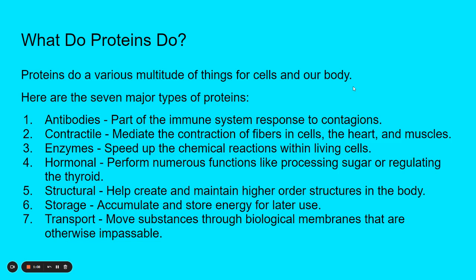What do proteins do specifically? They do a multitude of things for cells in our body, but there are major types of proteins that do certain tasks. There are many different ones in these different groups, but it's nice to have a general overarching archetype. So the first thing being antibodies, which are part of the immune system response to contagions. There are contractile proteins, which mediate the contractions of fibers and cells, like the heart and muscles.